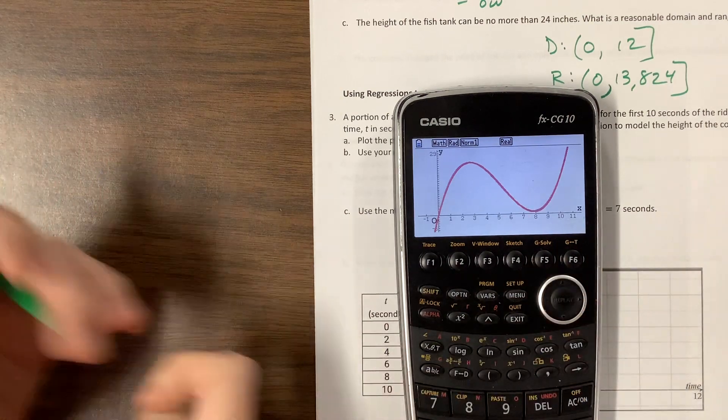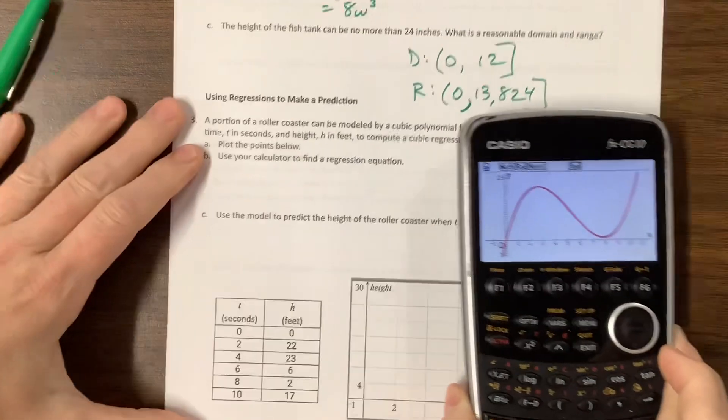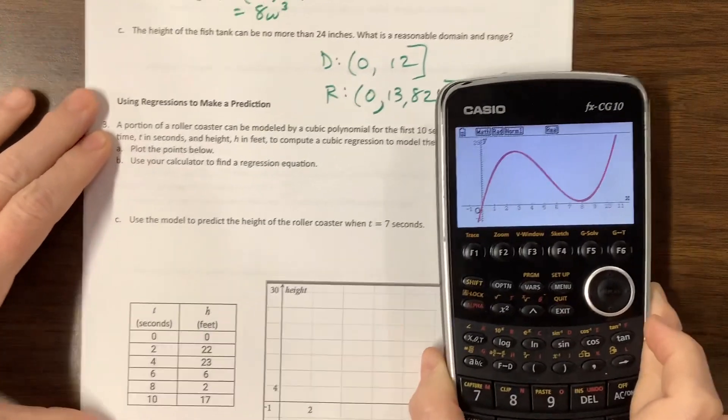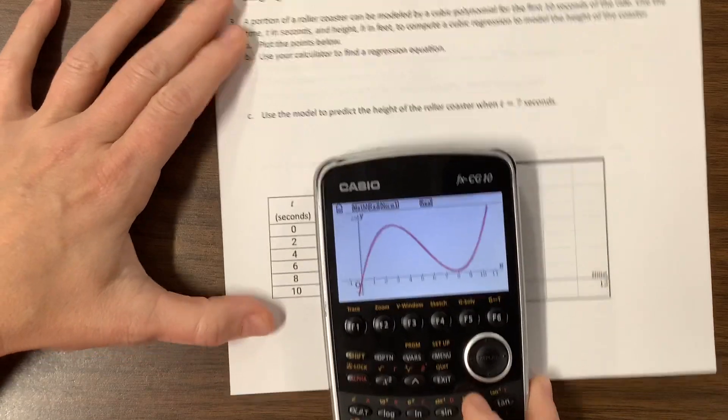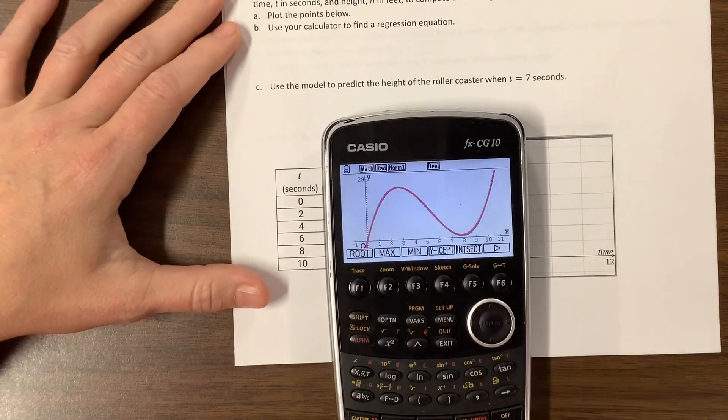I don't know. Maybe the red one is a tiny bit better, but I think that you can kind of answer that question however you want. So they wanted us to use that model to predict where it will be at 7 seconds. So this is where I would do g-solve.